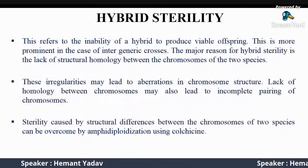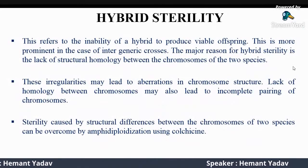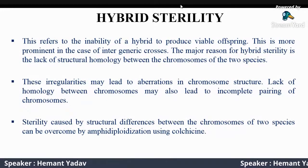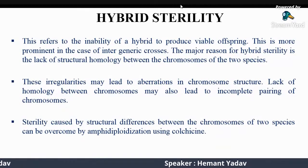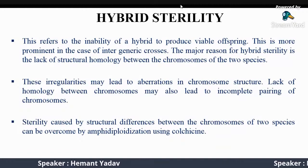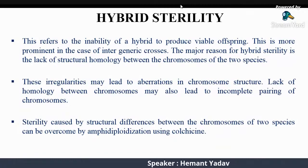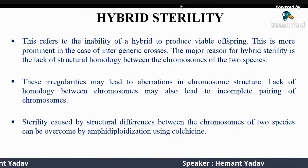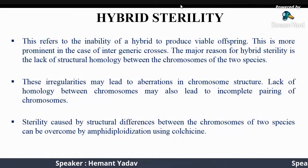Hybrid sterility refers to the inability of a hybrid to produce viable offspring. This is more prominent in inter-generic hybrids. The major reason for hybrid sterility is the lack of structural homology between the chromosomes of the two species. These irregularities may lead to alterations in chromosome structure, and lack of homology between chromosomes may also lead to incomplete pairing. Sterility caused by structural differences between chromosomes can be overcome by amphidiploidization by colchicine treatment.